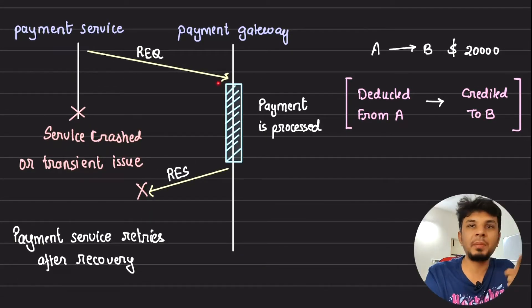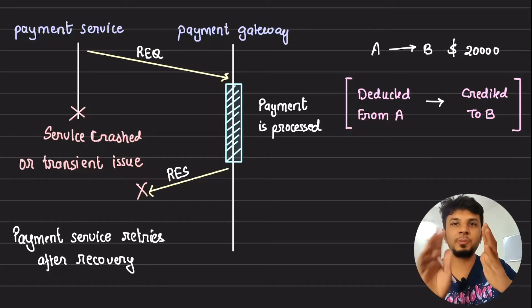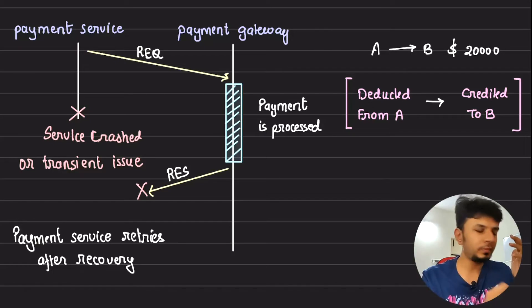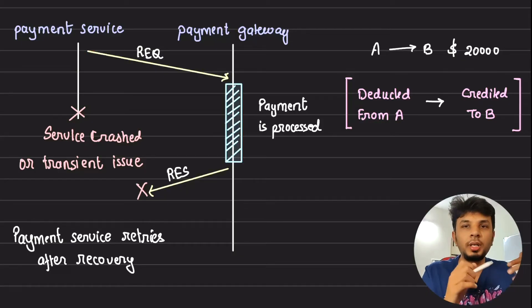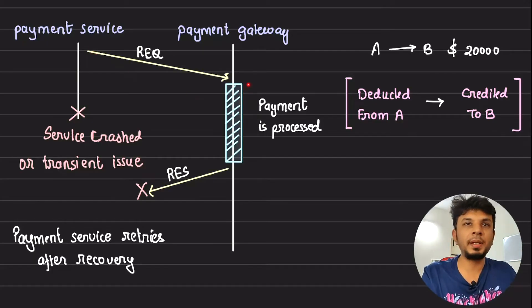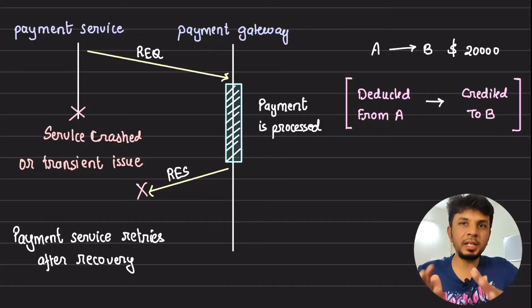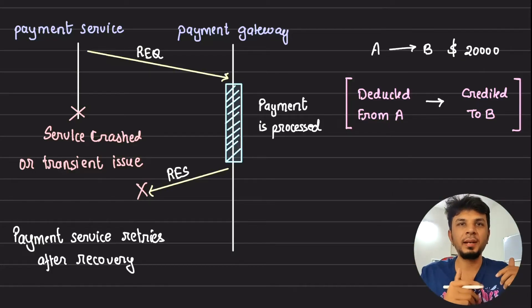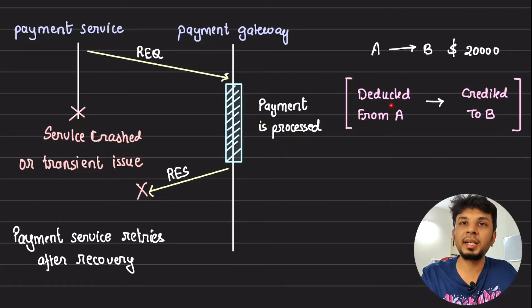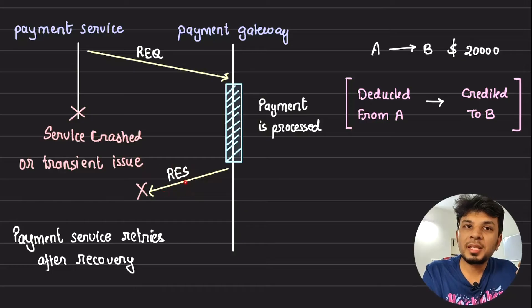Let's say I have a payment service and a payment gateway. The payment gateway receives a request from A to B to transfer money and in one shot the transfer happens. So the payment service got a request that A wants to transfer $20,000 to B. The payment service made a request to the payment gateway, which immediately transferred the $20,000 from A to B. It processed the payment — deducted from A's account, credited to B's account — and then sent a response. But this response never reached the payment service.